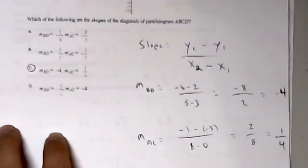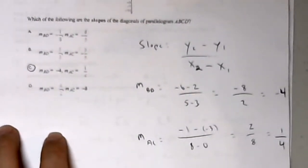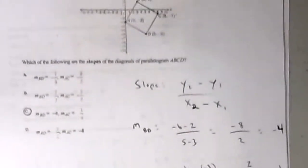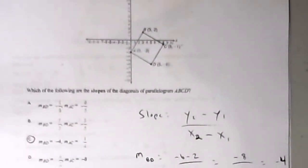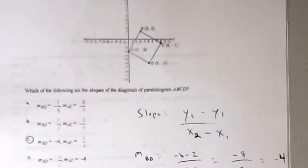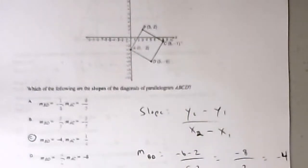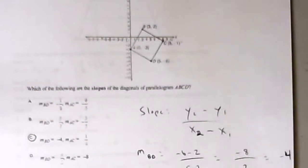None of the other answer choices have slopes that are opposite reciprocals. So I could look at the choices and say these are opposite reciprocals — that's my answer. One shortcoming of this problem is that if they just said prove ABCD is a rhombus, I could also prove the two pairs of sides are parallel and use the distance formula to show all four sides are equal. But you can't do that on a multiple choice test.